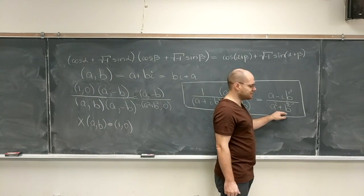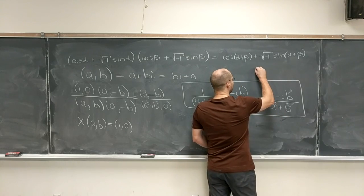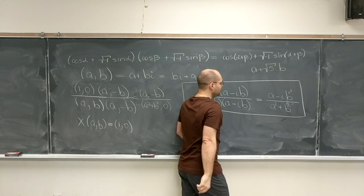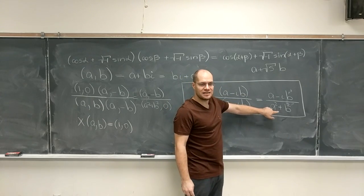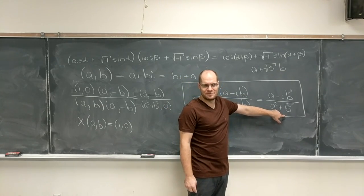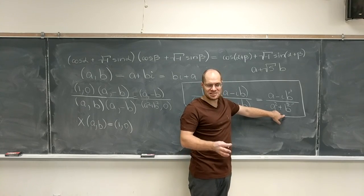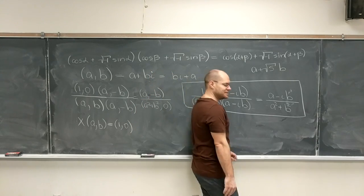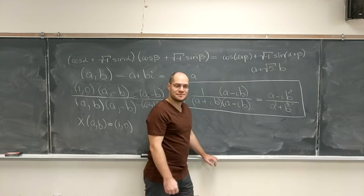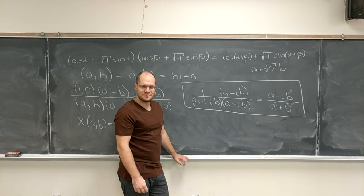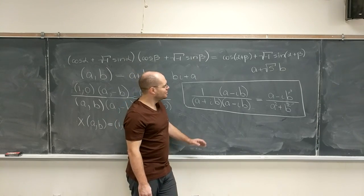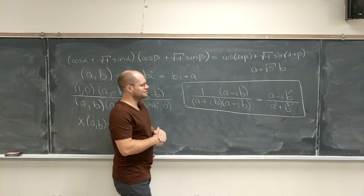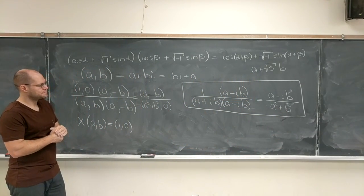And if you recall, thinking back to last week, when we did this with numbers of the kind a plus square root of 5 times b, on the bottom we ended up with a² minus 5b², which had a minus sign. And yes, we got lucky that with rational a and b that number could not have been zero. But here this issue doesn't even arise. It's even better. So complex numbers are even better than these numbers. You just have the sum of squares, which is just perfect. Doesn't get any better than that.